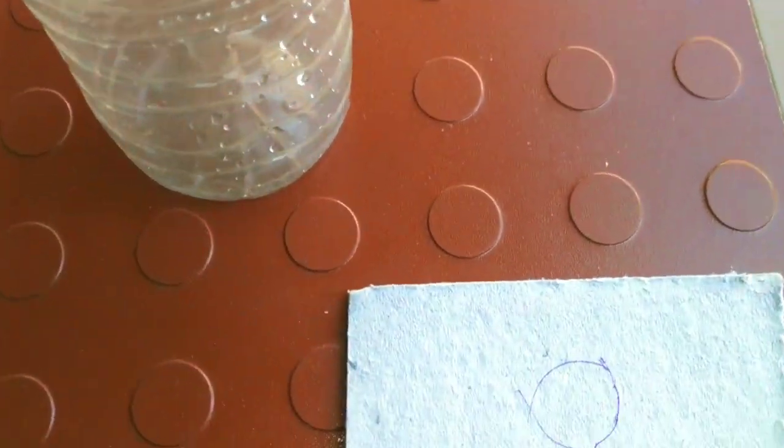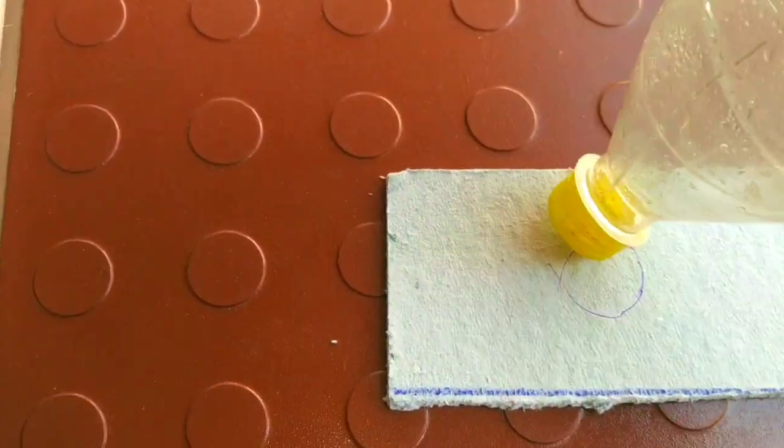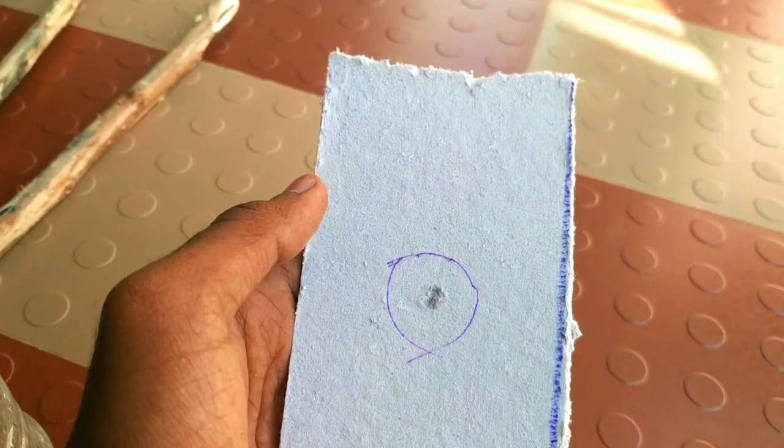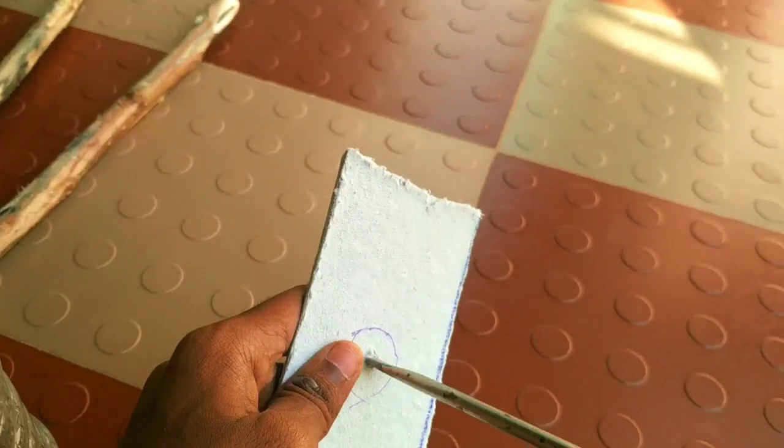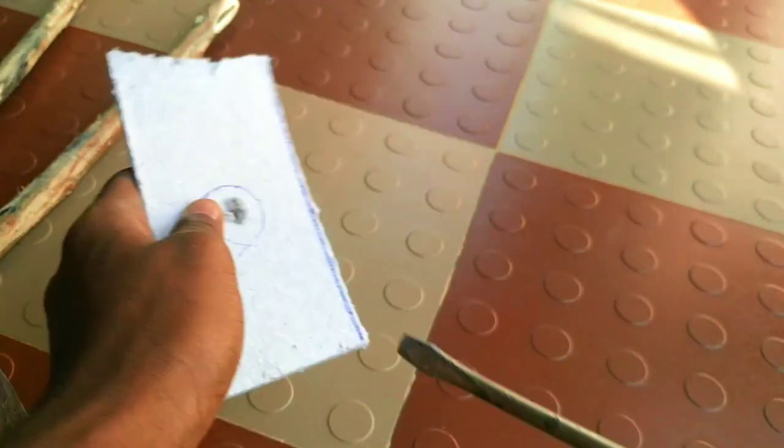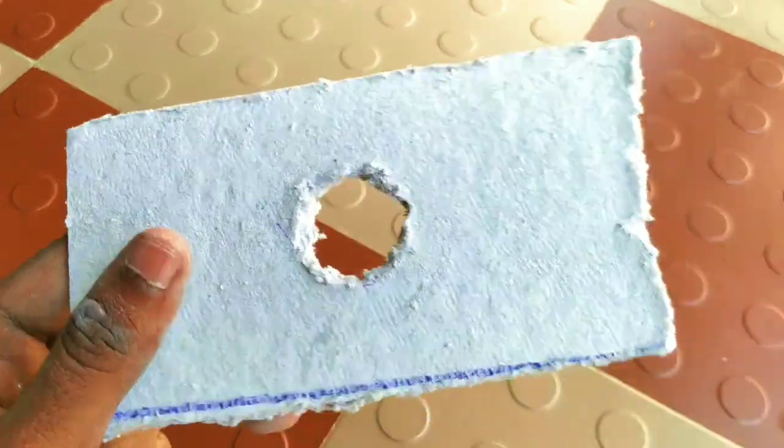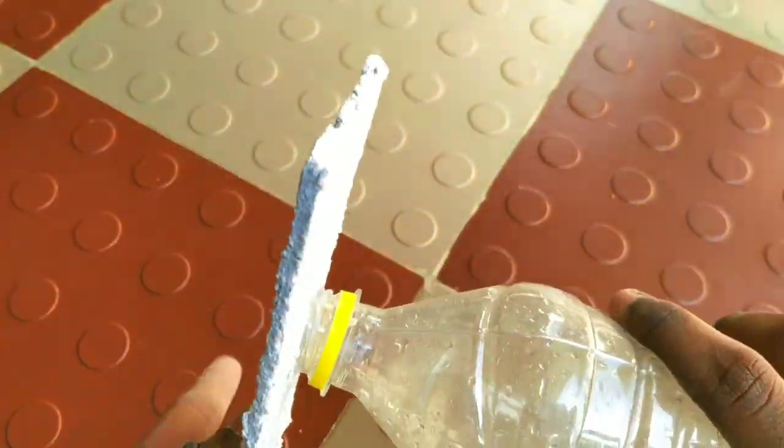We can use a DIY pad. First, we have a round of cardboard. We will cut the water bottle as well. Now, we will fix it in the water bottle.